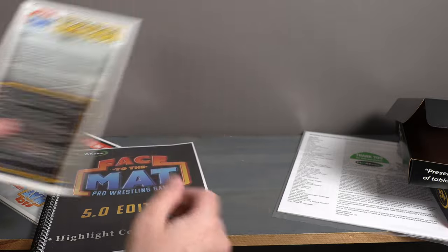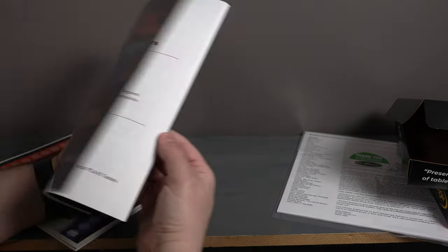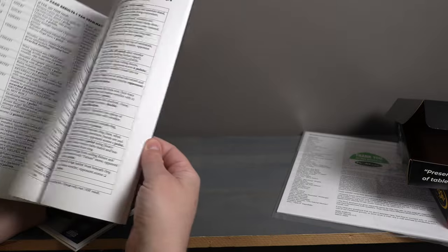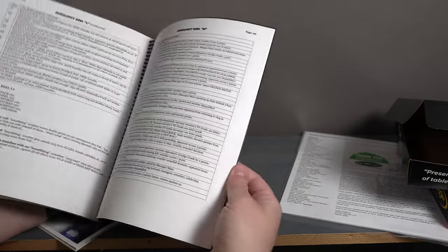Here is the highlight center booklet. So this is the booklet that you roll the dice and you find out different things that happen in here. These are the different charts for the game. That is cool.